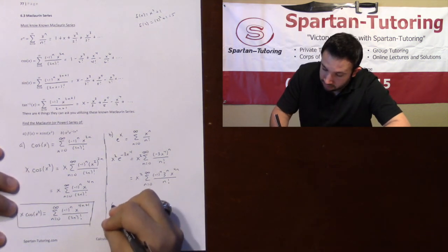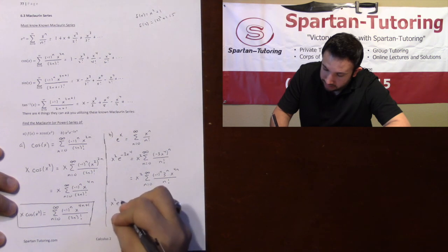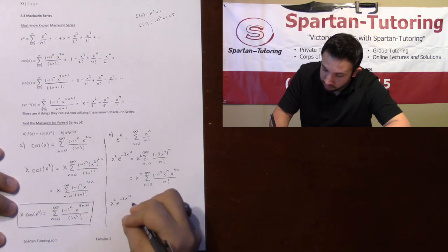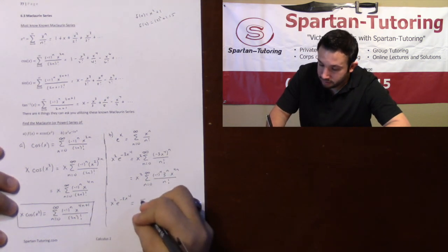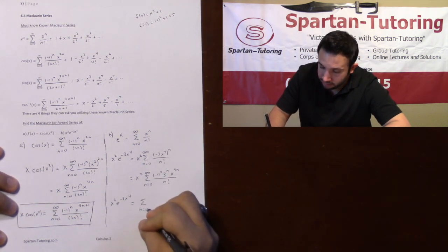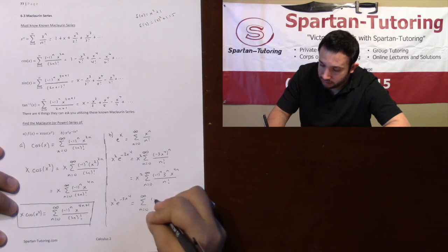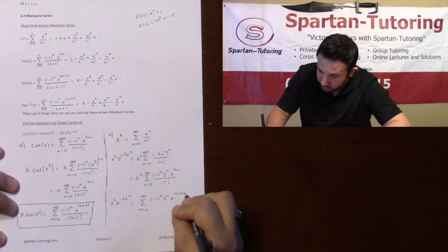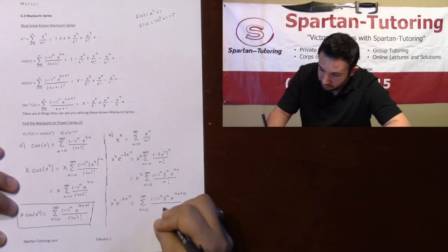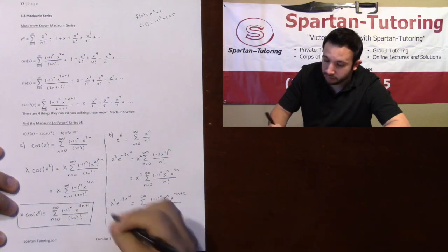And then finally, just distribute that X squared into there. And so your final answer, X squared E to the negative 3X to the 4th. Multiplying common bases, you add the exponents. And so this will be the sum from 0 to infinity. Then negative 1 to the N, 3 to the N. And multiply the X squared in. You have X to the 4N plus 2. All over N factorial.